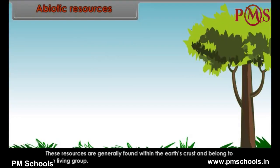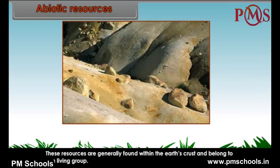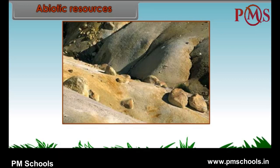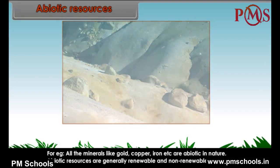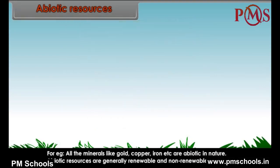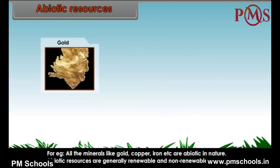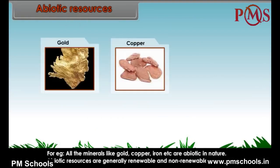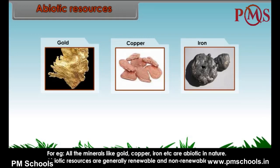Abiotic resources are generally found within the earth's crust and belong to the non-living group. For example, all the minerals like gold, copper, iron, etc. are abiotic in nature.